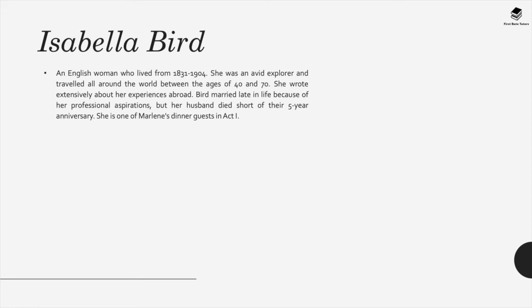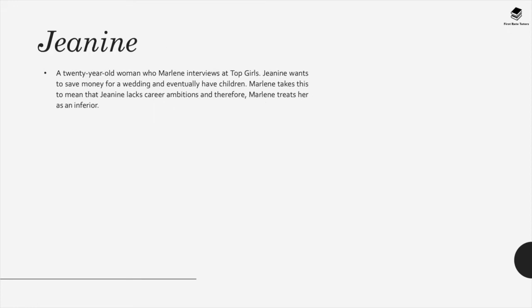Isabella Bird was an English woman who lived from 1831 to 1904. She was an avid explorer and traveled all around the world between the ages of 40 and 70, and wrote extensively about her experiences abroad. Bird married late in life because of her professional aspirations, but her husband died short of their five-year anniversary. She is one of Marlene's dinner guests in Act 1. Janine is a 20-year-old woman who Marlene interviews at Top Girls. Janine wants to save money for a wedding and eventually have children. Marlene takes this to mean that Janine lacks career ambitions and therefore treats her as an inferior.